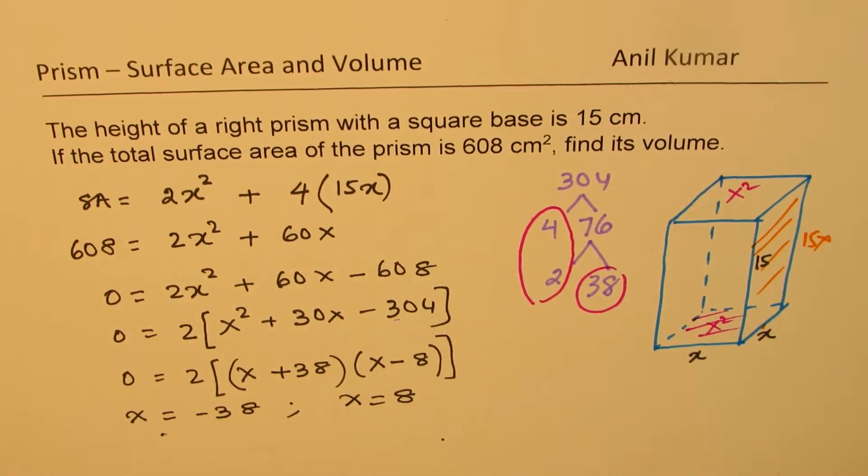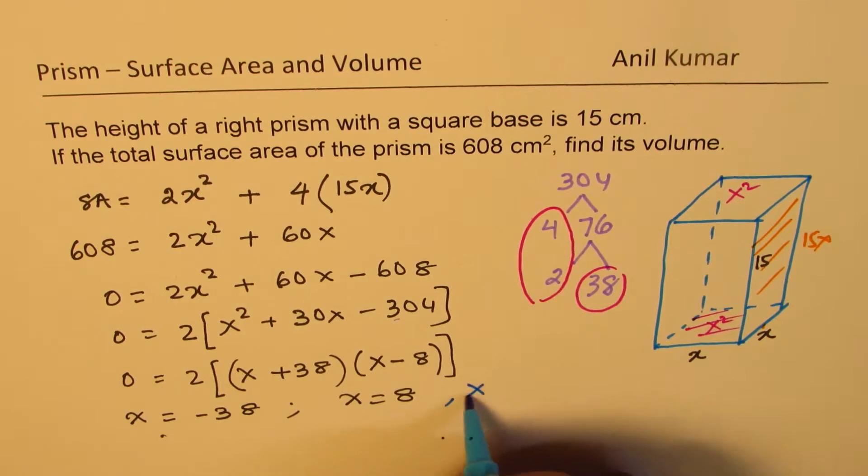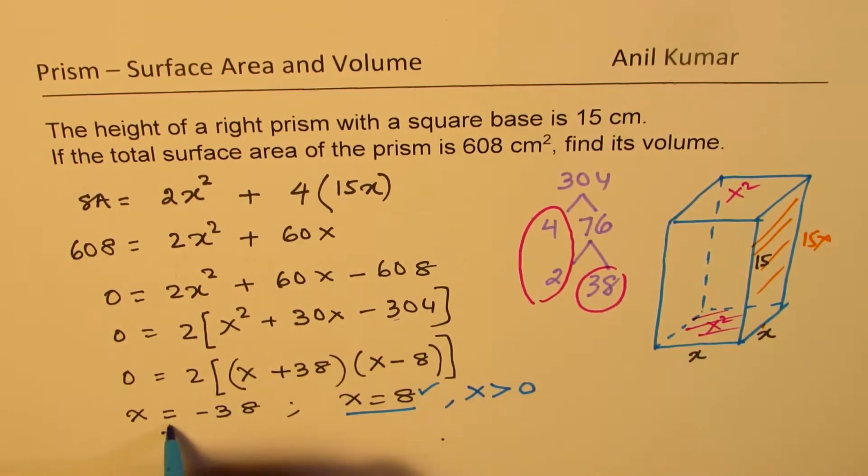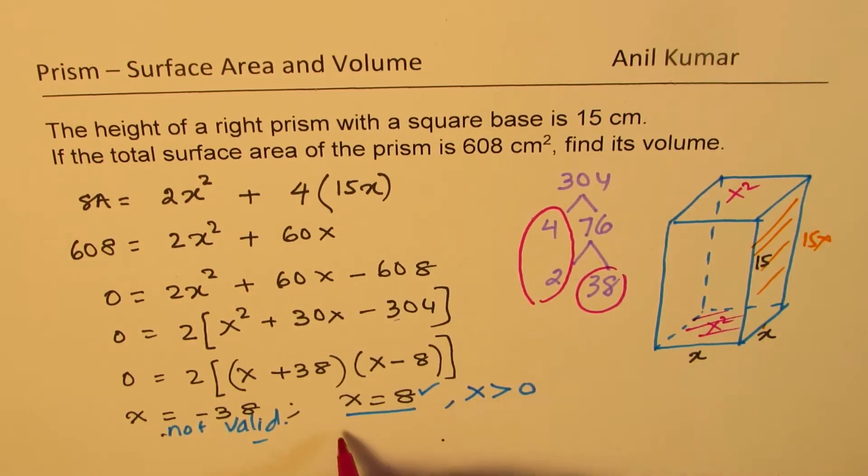Now, minus 38 is not valid because the side is always positive. x has to be greater than 0. So this is the only valid answer. This is not valid. So we get the side x. Therefore, we get x is equal to 8.